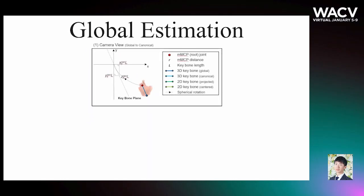During training, we generate the 3D canonical poses by spherically rotating the 3D global poses to the center of the view, then applying zero centering and normalization.